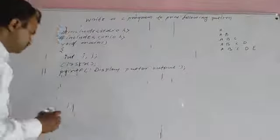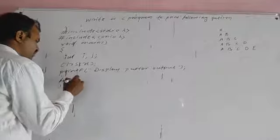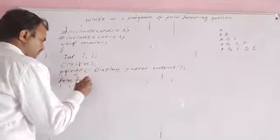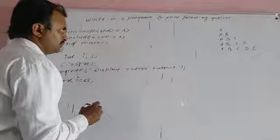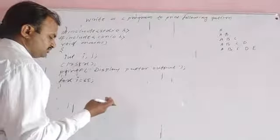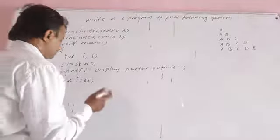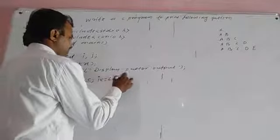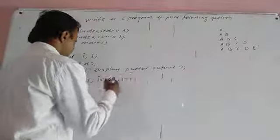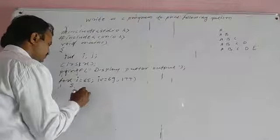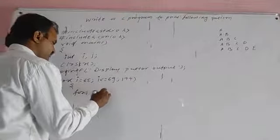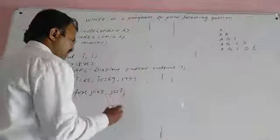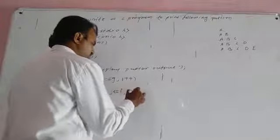For the outer loop: i is equal to 65, i less than or equal to 69, and i plus plus. For the inner loop: j is equal to 65, j less than or equal to i, and j plus plus.